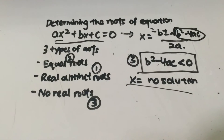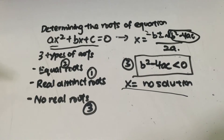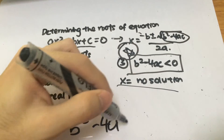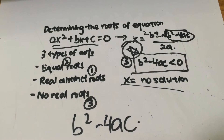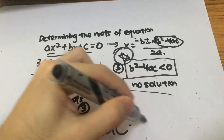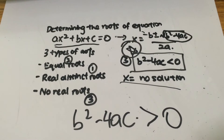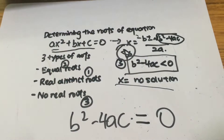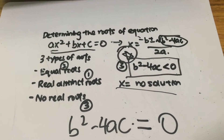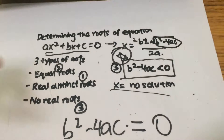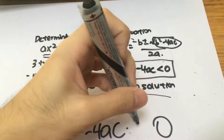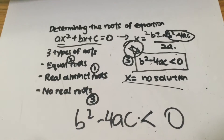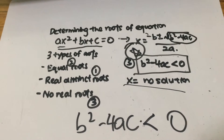To sum up, in order to determine the root of a quadratic equation, you use the formula b squared minus 4ac. If b squared minus 4ac is greater than 0, x has real distinct roots — two values of x. If b squared minus 4ac equals 0, there is only one answer — equal roots. And if b squared minus 4ac is less than 0, there is no solution, meaning the roots are not real — or unreal roots, which basically means there are complex numbers.